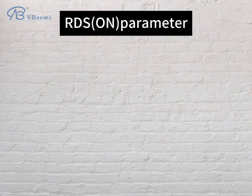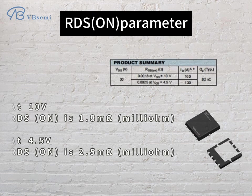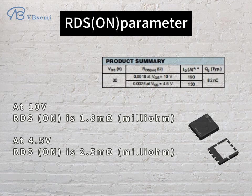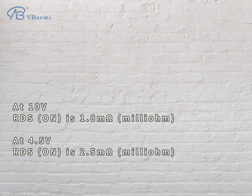RDS(on) parameter: at 10 V, RDS(on) is 1.8 mΩ. At 4.5 V, RDS(on) is 2.5 mΩ.